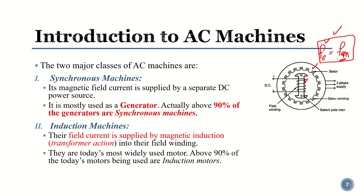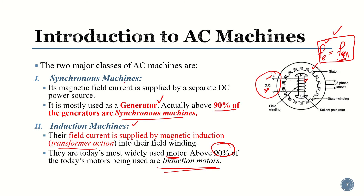This principle is practically used in generators — 90 percent of generators are synchronous generators. In induction machines, the field current is supplied by magnetic induction, a transformer action. In a synchronous machine you supply the field current via a separate DC power source to the rotor; in an induction machine you do not use a separate DC input source — it happens through the induction process, which we will see in more detail later. This principle is mostly used in motors, as 90 percent of motors are induction motors.